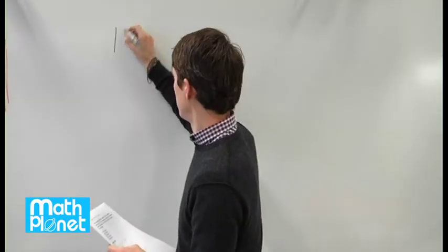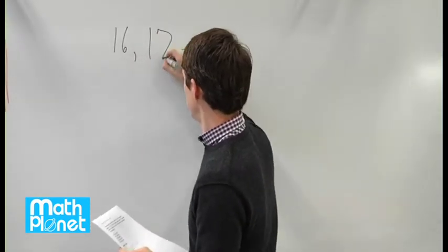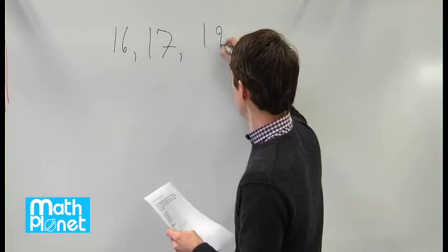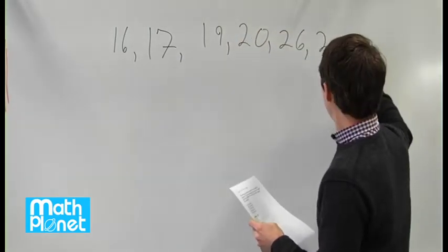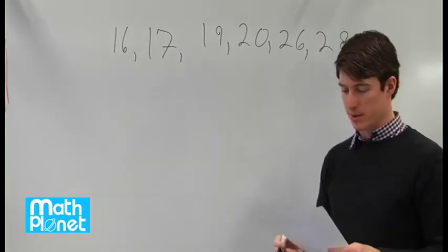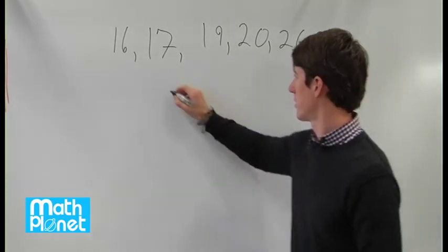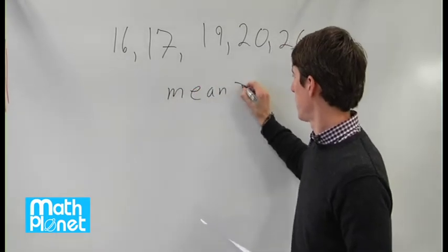So we have this set, and the average, or the arithmetic mean, of the six numbers is 21. So the mean equals 21.